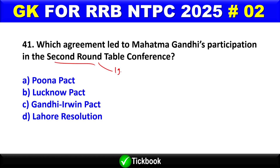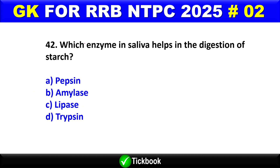Option C is the right answer — pollination. Question number 41: Which agreement led to Mahatma Gandhi's participation in the Second Round Table Conference, which was in 1931? The answer is the Gandhi-Irwin Pact — Option C is the right answer.